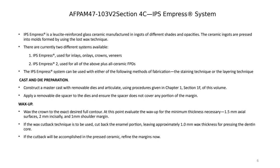Another technique increasingly used to give the restoration more strength while maintaining high aesthetic value is the cutback technique. We wax up a full contour crown, then cut back the wax on the facing, press the material, and apply porcelain only on the facing. This gives a layer of porcelain on the facing that is more translucent and easier to match to the natural dentition.